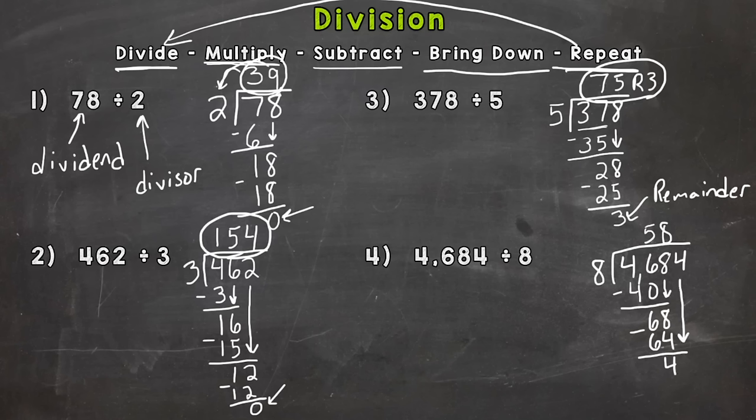Bring down our 1's digit, the 4 there. So now we have 44 divided by 8. How many groups of 8 can we pull out of 44? And the answer to that is 5. Multiply. 5 times 8 is 40.